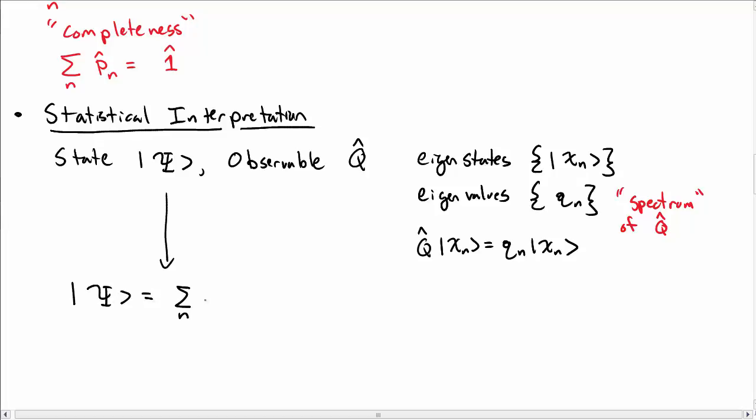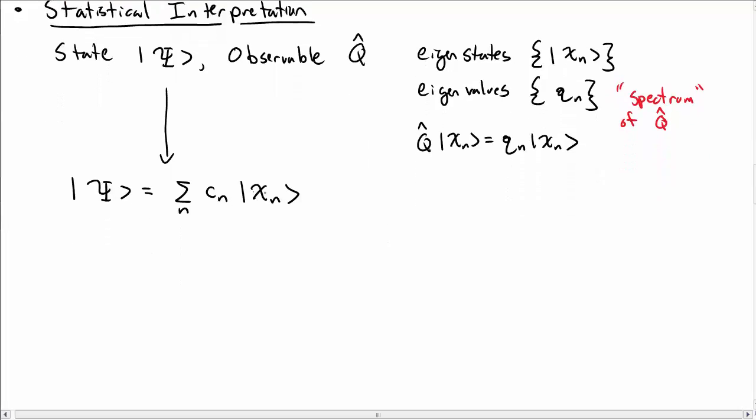I can write capital psi as a sum over these eigenstates with some coefficients c sub n. This c sub n, you can interpret it roughly as how much chi sub n is in the state capital psi. That's one way to think about this coefficient c sub n. We're going to make that more precise.